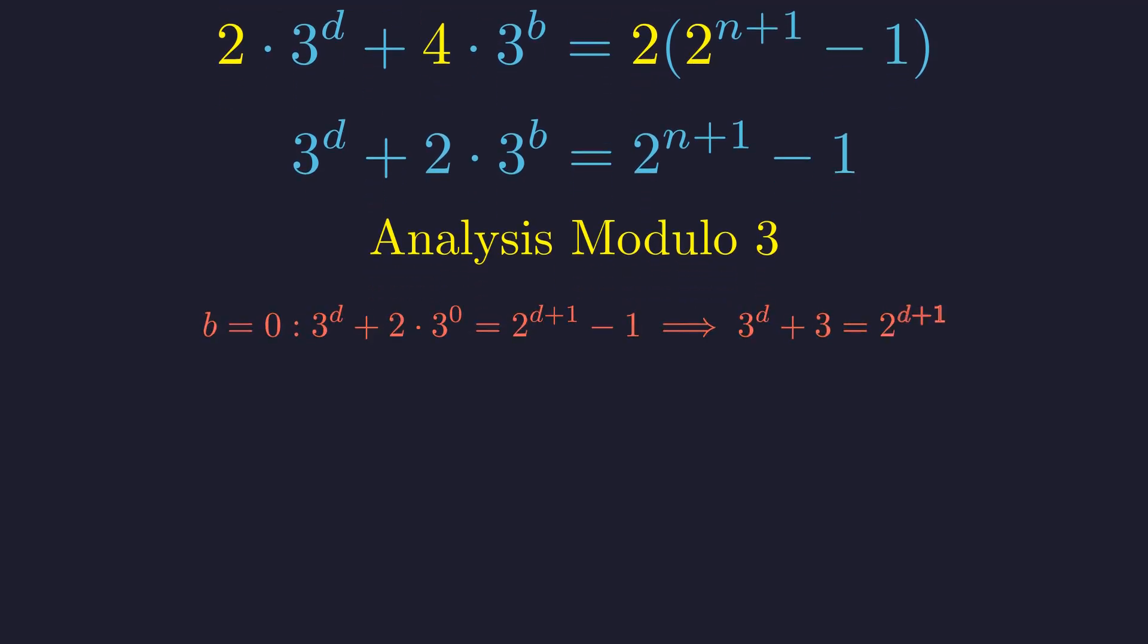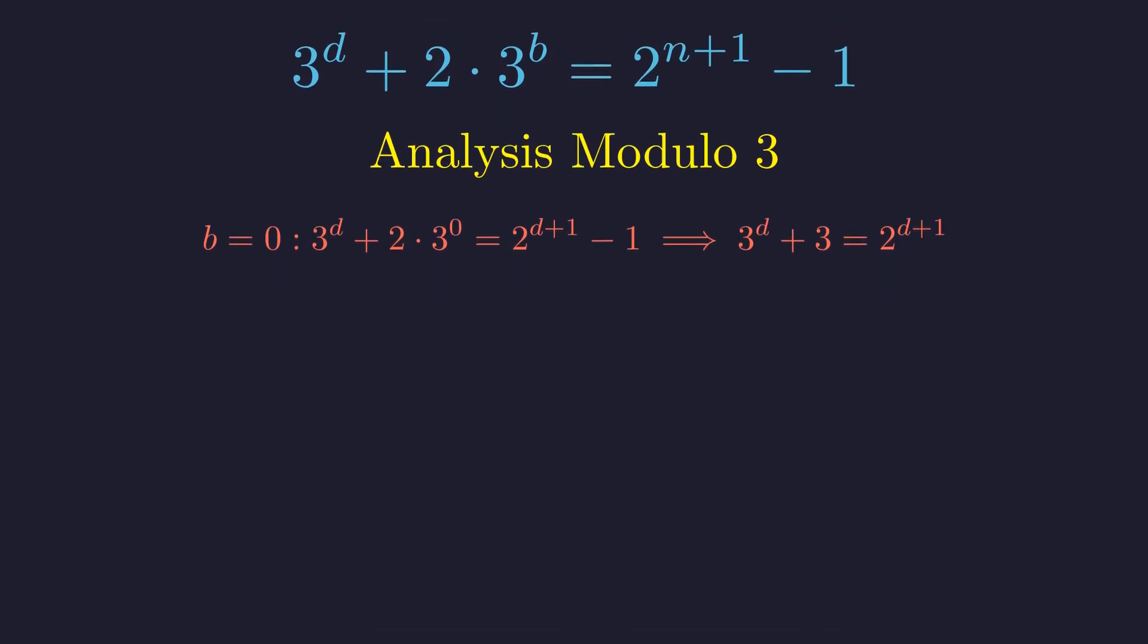If b is 0, our equation becomes this. We also require d to be greater than 0. Checking small values shows no solutions exist, and an inductive proof confirms that for d greater than or equal to 2, the left side is always larger than the right side. So b cannot be 0. Having ruled out that b equals 0, we now know both b and d must be positive integers.